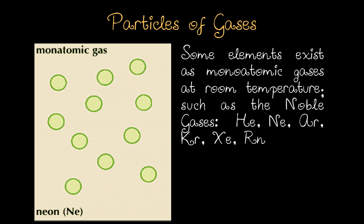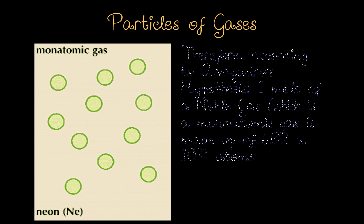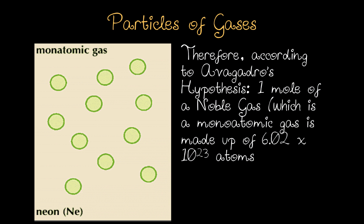Some elements exist as monoatomic gases at room temperature, such as the noble gases: helium, neon, argon, krypton, xenon, and radon — monoatomic, one-atom gases. Therefore, according to Avogadro's hypothesis, 1 mole of a noble gas, which is a monoatomic gas, is made up of 6.02 × 10²³ atoms.